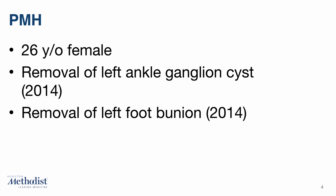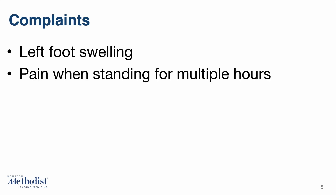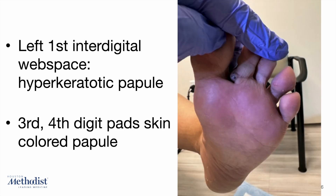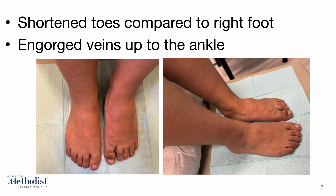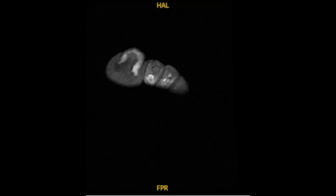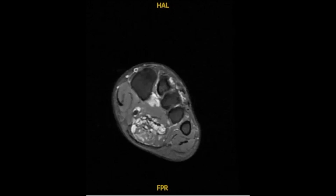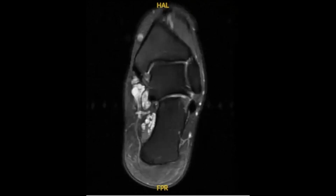The patient is a 26-year-old female with a past medical history of a left ankle ganglion cyst and bunion on the left foot. Both of these were removed in 2014. She recently presented with left foot swelling and pain, especially when standing for multiple hours. Physical examination revealed a hyperkeratotic papule in the first interdigital web space on the left foot and skin-colored papules in the region of the third and fourth toes. The toes on the left foot were also shorter than those on the right, and engorged veins presented on the left all the way up to the ankle. MR imaging revealed venous malformations and the decision was made to proceed with STS sclerotherapy from percutaneous access points.